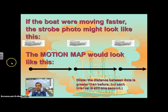Now if that same boat were to move faster than before, our motion map would look something like this, where we still have these same dots, but now the dots are spread out further apart, and the arrows are longer, representing a faster velocity. Notice that the distance between these dots has increased because the boat's moving faster, but the time interval is still one second apart.